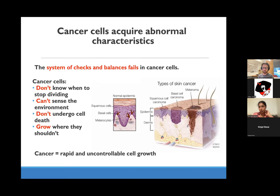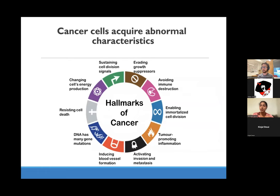By studying cancer cells from different tissues, researchers have defined ten unique traits called the hallmarks of cancer. If you look at different types of cancers from different organs and tissues, you'll notice that they promote uncontrollable growth through one of these traits. One hallmark that immunotherapy aims to target is increasing immune system recognition of cancer cells, so the immune system can recognize and target them. So how is our immune system able to do this?